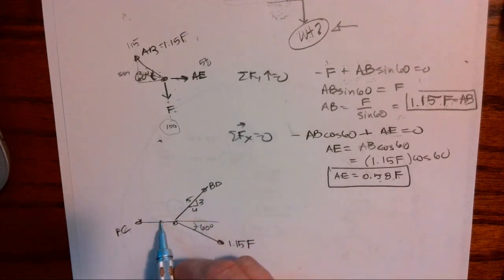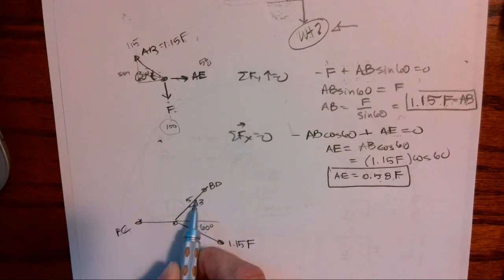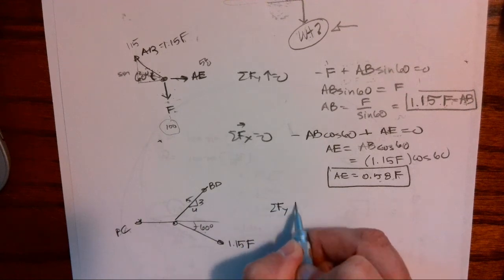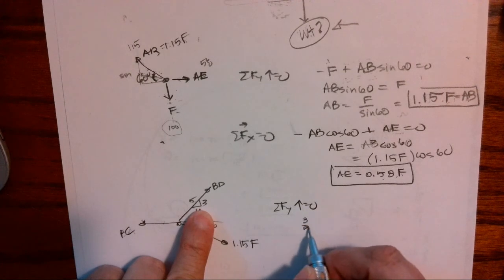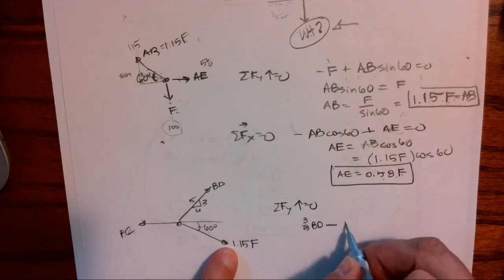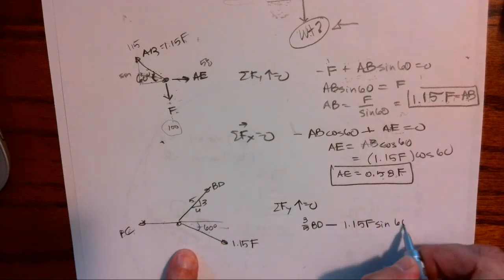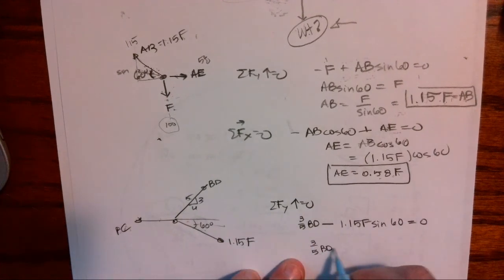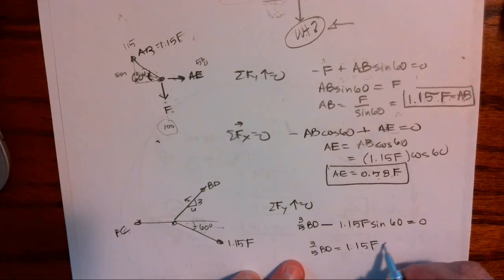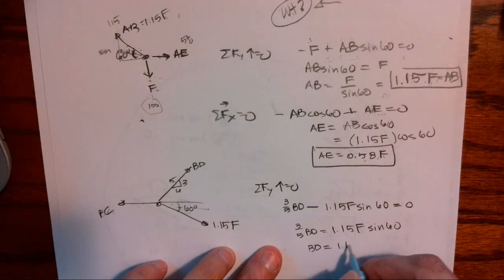Okay, so we are going to have 3/5 BD minus 1.15 F sine, sine, sine, sine 60 equals 0. So I have 3/5 BD equals 1.15 F sine 60. So BD equals 1.15 F sine 60 times 5/3. Well, that's a big giant mess, so let's simplify.